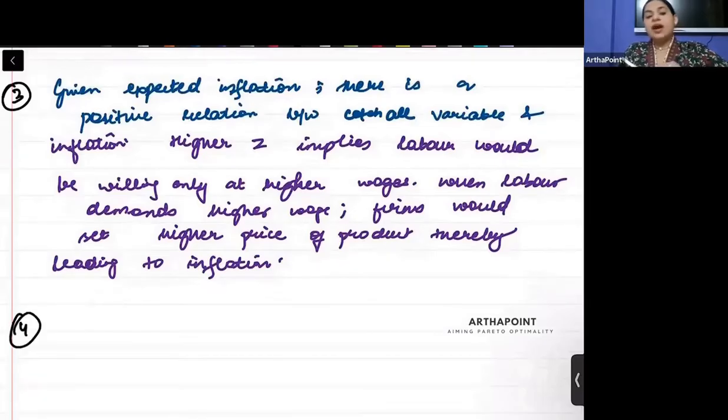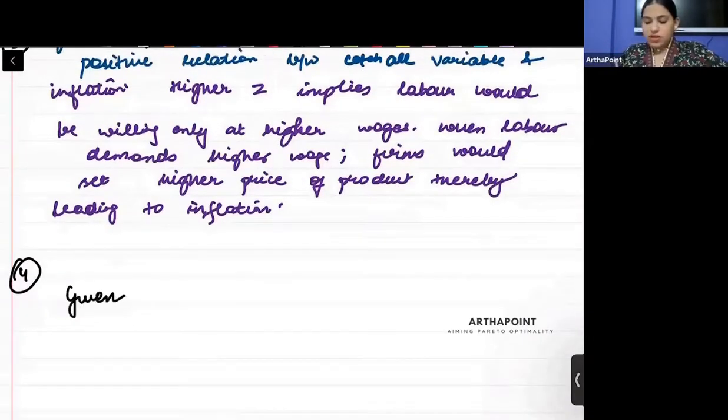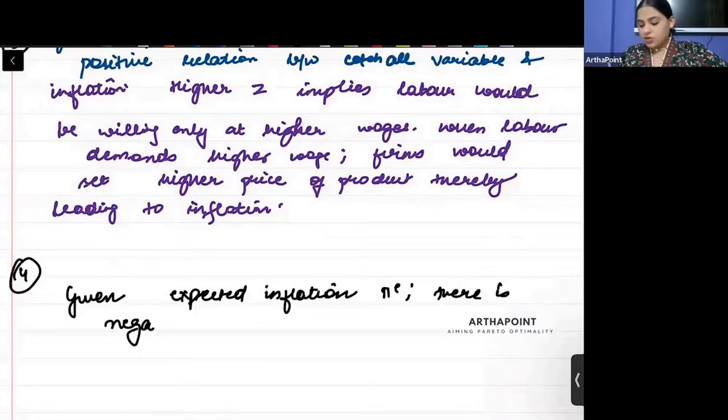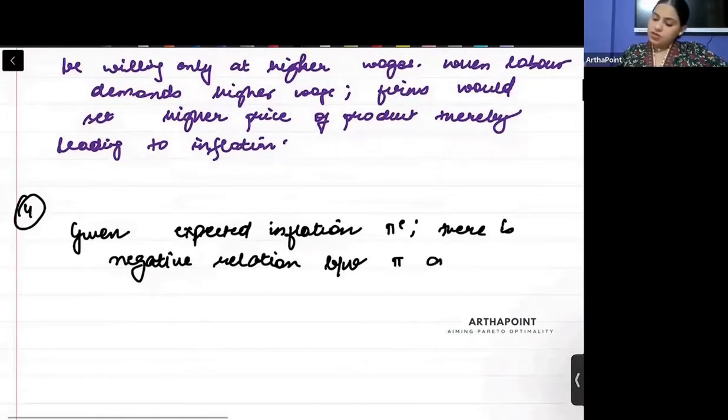Now we come to unemployment. So unemployment has a negative relationship. What? When unemployment increases, bargaining power gets reduced. Wage will be low, so firms can sell at low price. So please write down the last relationship. Given holding expected inflation constant, there is negative relationship between inflation and unemployment rate.